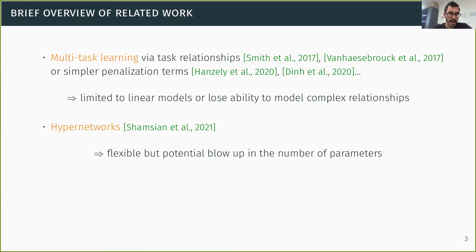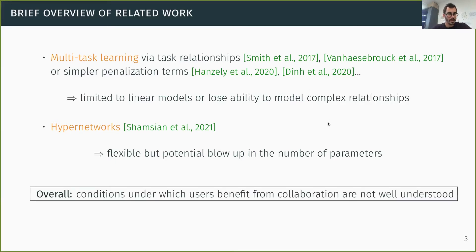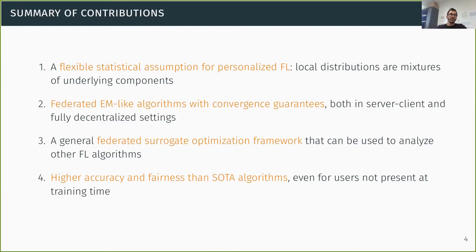There is also some recent work based on hypernetworks. So here, the idea is that you have a global network, but this global network is itself parameterized by some user embedding that you learn along with the global network. This is quite flexible, but typically leads to blowing up the number of parameters. Overall, maybe a general comment is that the conditions under which users benefit from collaboration in personalized federated learning are not well understood. So this is something that we're going to try to address in our work.